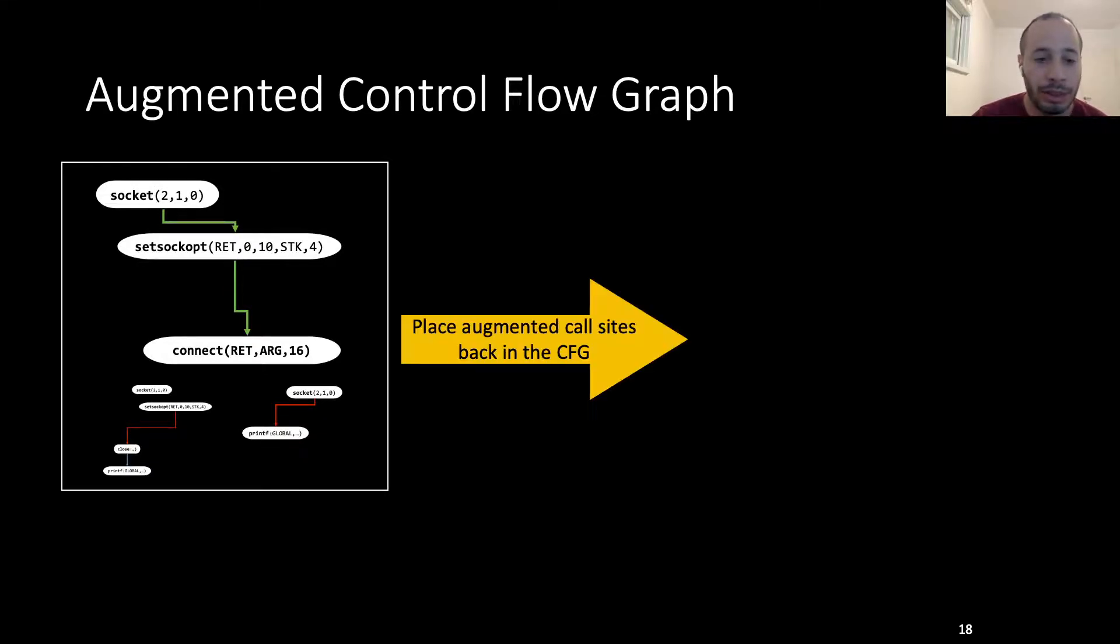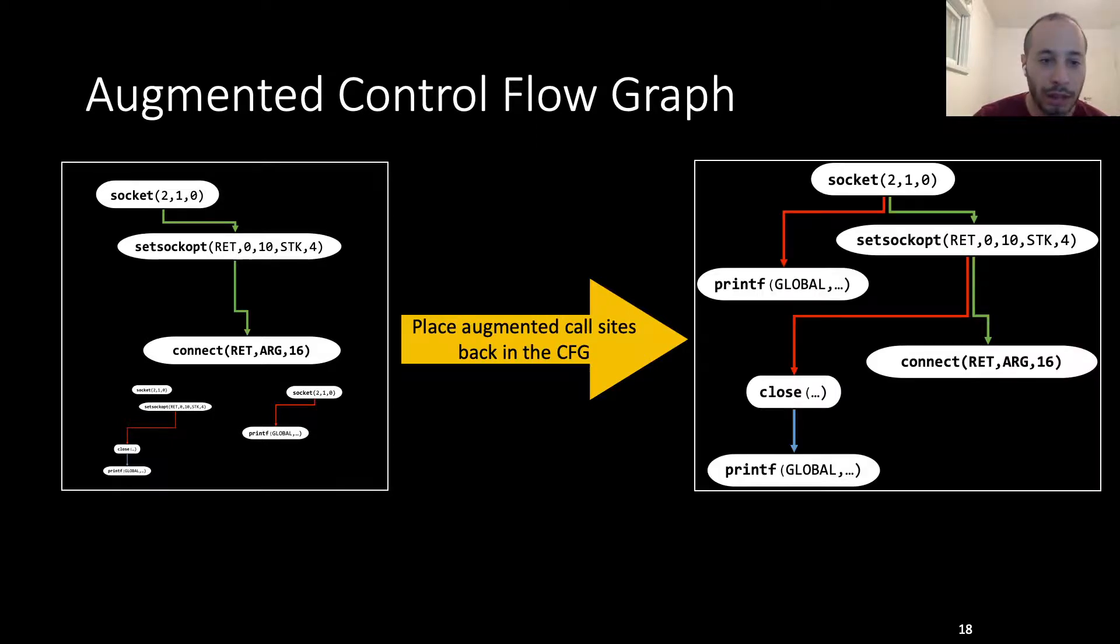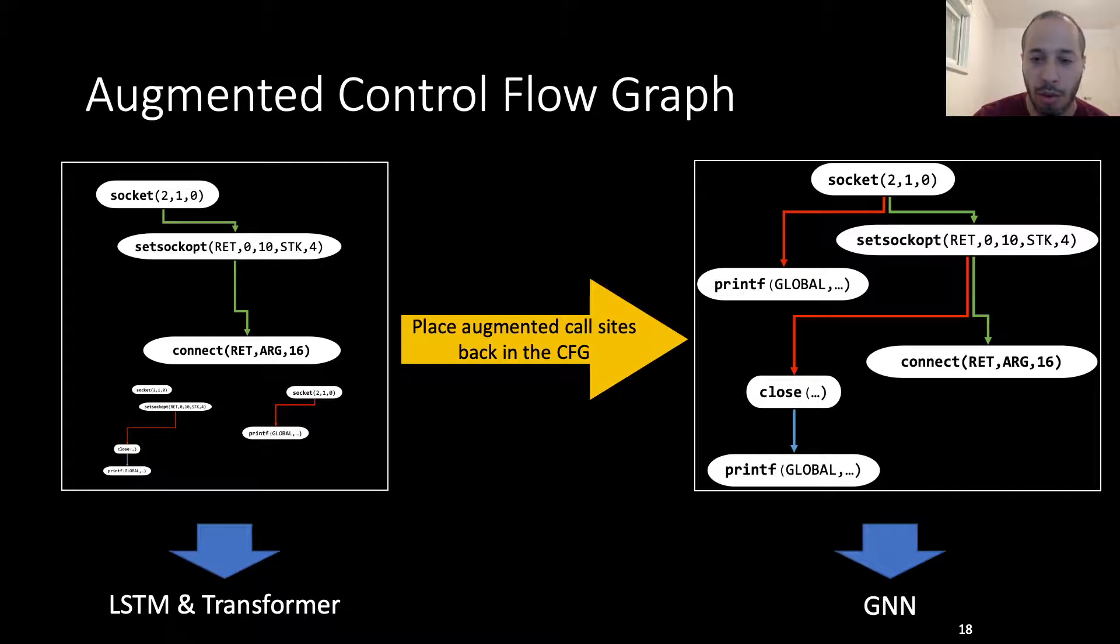We note that while our examples were based on external API calls, we will perform the same steps for other types of calls. These results in the set of paths of augmented call sites. We take these paths and place the augmented call sites back in the CFG to create the augmented control flow graph. This will allow us to use an LSTM and transformer modules for the set of paths, and the GNN modules for our graph.